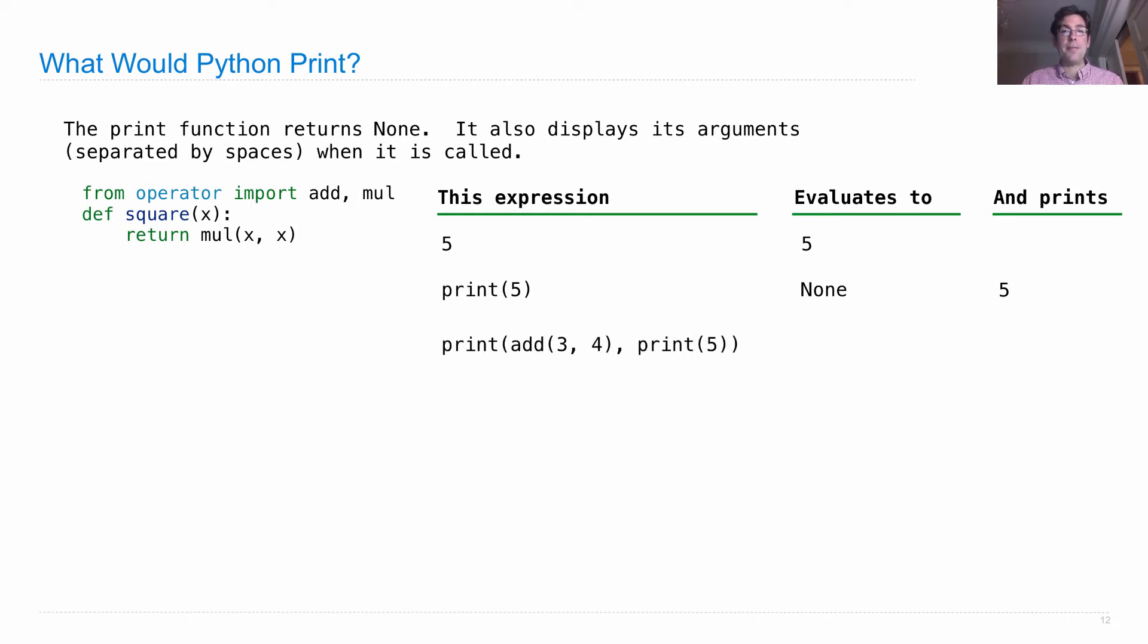What about print(add(3, 4), print(5))? In order to evaluate this, we evaluate first the operator, which gives us the print function that's built in, and then the two operands. add(3, 4) evaluates to 7. print(5) evaluates to None, and as a consequence of evaluating that operand, 5 is printed. Then 7 and None are passed as arguments to the print function, which evaluates to None. But as a consequence, it prints its arguments separated by a space, so you see 7 space None.